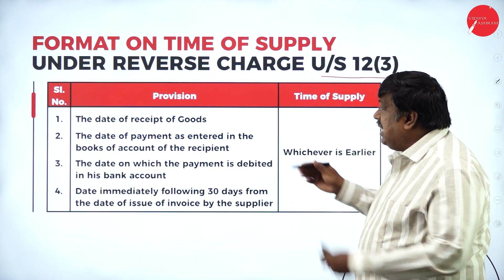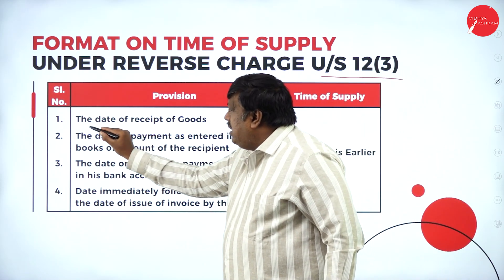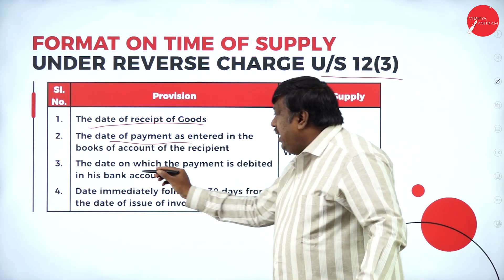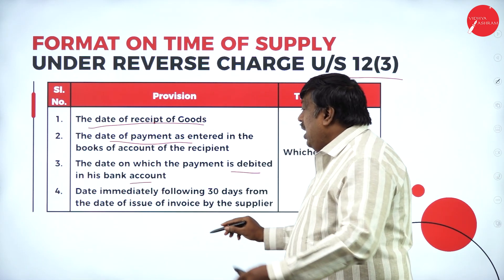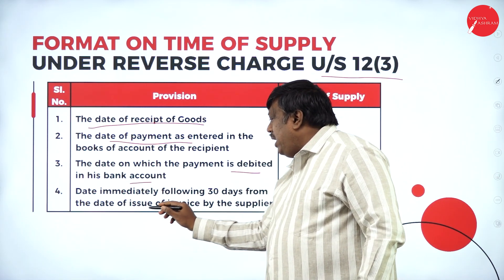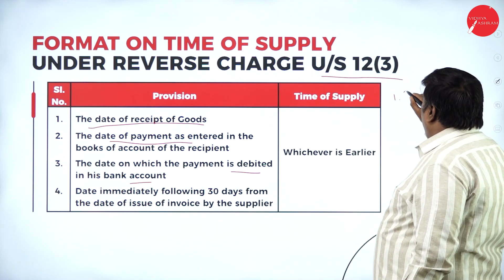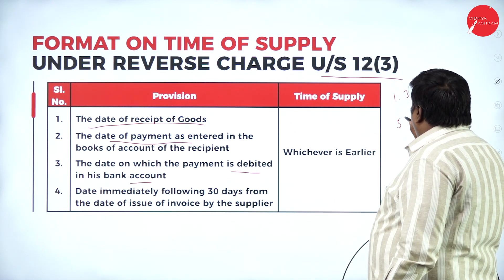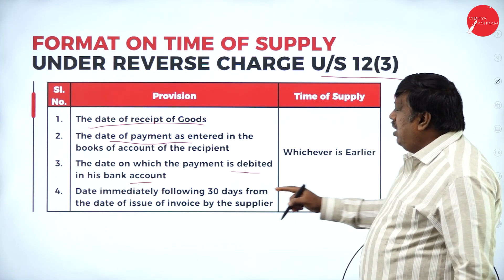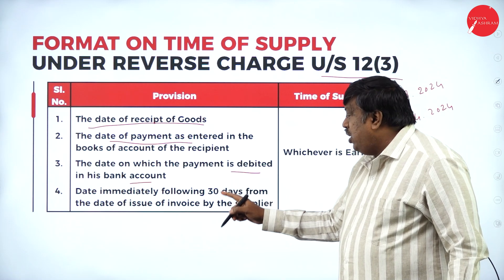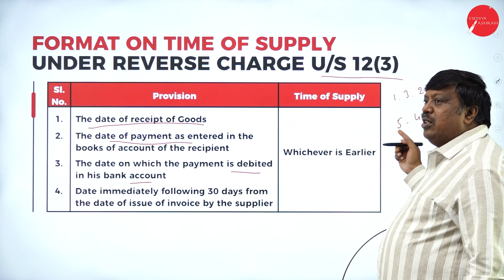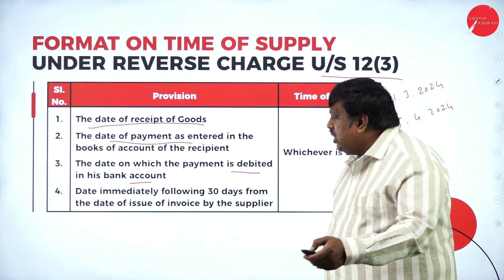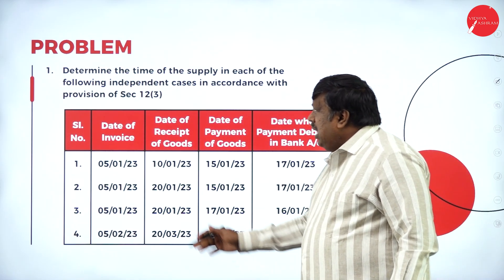We are going to discuss the format on time of supply under reverse charge under Section 12 sub-clause 3. The formats we have to consider are: the date of receipt of goods, the date of payment as entered in your books of accounts, the date on which payment is debited to the bank account, and the date immediately following 30 days from the date of issue of invoice by the supplier. If it is more than 30 days, we have to check which date has to be considered.